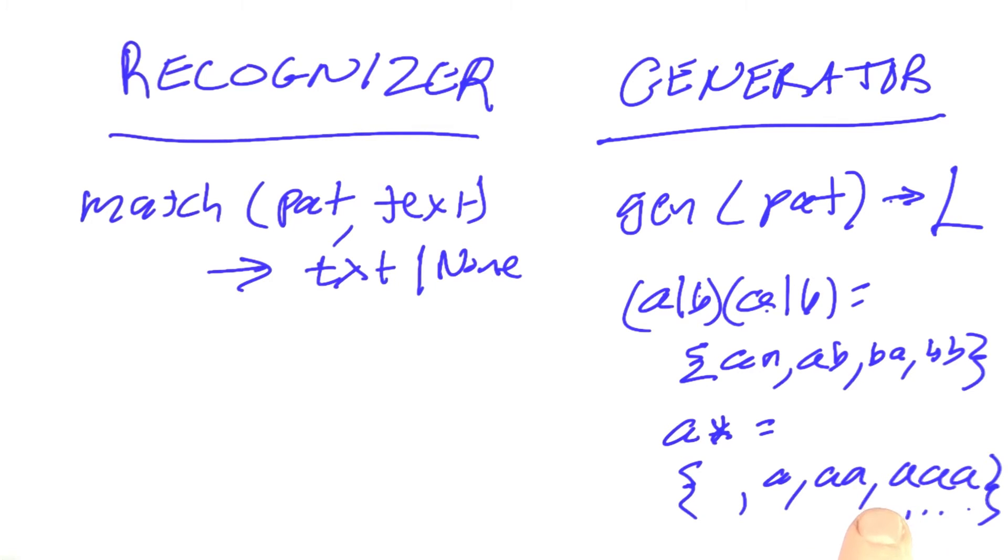How are we going to represent this infinite set? It's possible we could have a generator function that generates the items one at a time. That's a pretty good interface. Instead, I'm going to have one where we say let's limit the sizes of the strings we want. If we say we want all strings up to n characters in length, then that's always going to be a finite set.